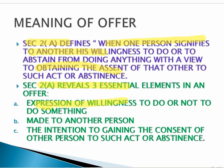The third element is that the offer is made to another party with the intention of gaining the consent of the other person to such act or abstinence. It is called an offer. The person who makes the offer is called the offeror, and the person to whom the offer is made is called the offeree.